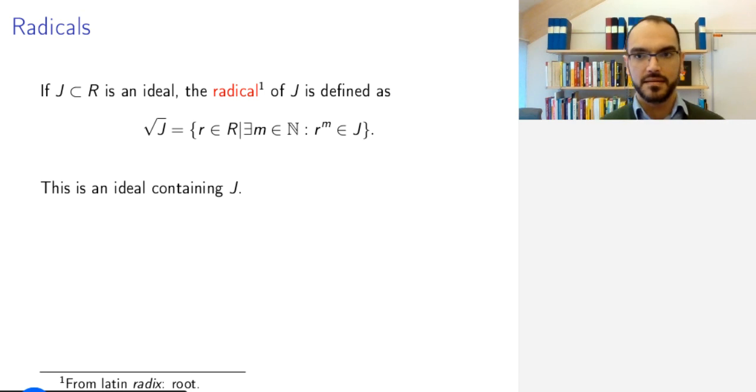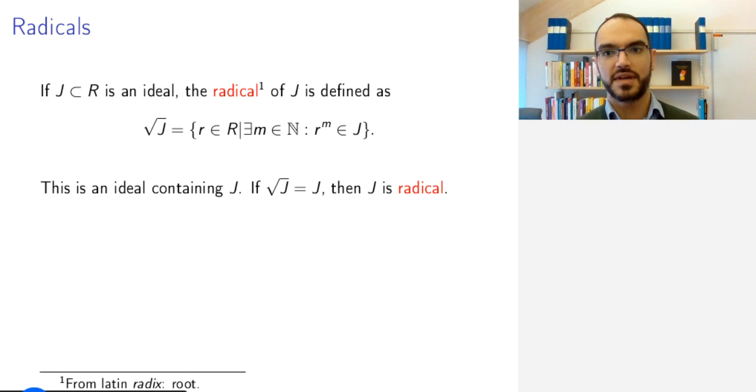The radical is an ideal. You have to check this. And it contains J because any element in J raised to the power one is already in J. And so if an ideal is such that when you create the radical you don't add anything new then the ideal is called a radical ideal. So this first radical is a noun, the radical, and here radical is an adjective. An ideal is called a radical ideal if it is equal to its own radical.